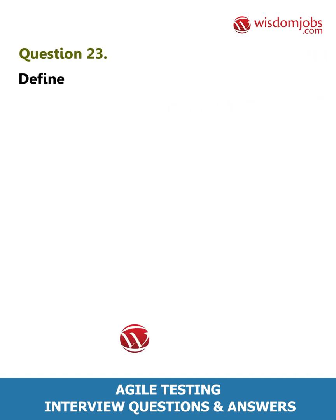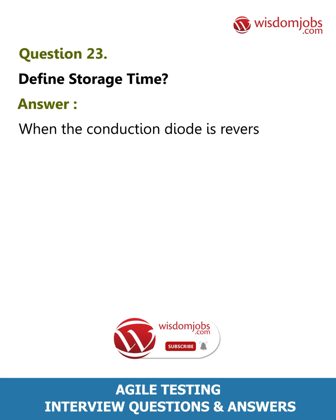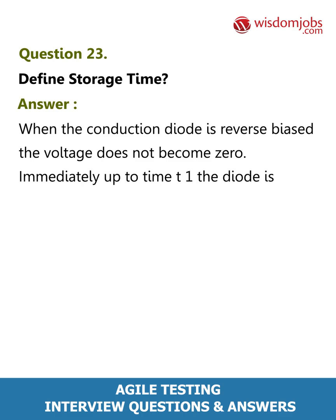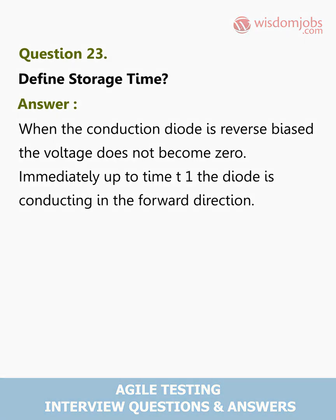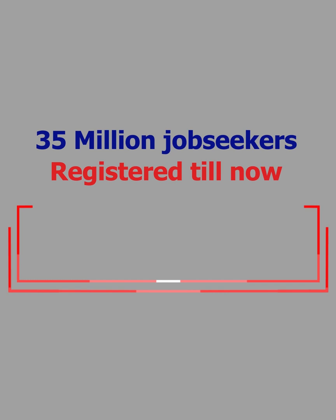Question 23: Define storage time. Answer: When the conducting diode is reverse biased, the voltage does not become zero immediately. Up to time t1, the diode is conducting in the forward direction.